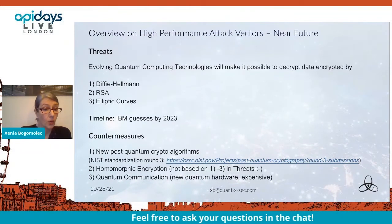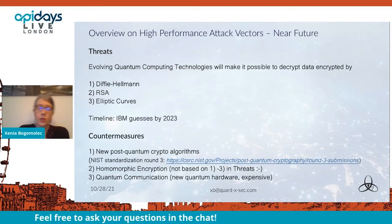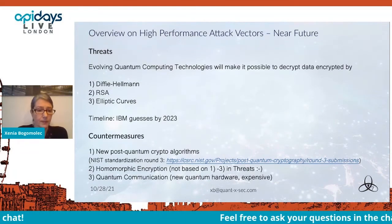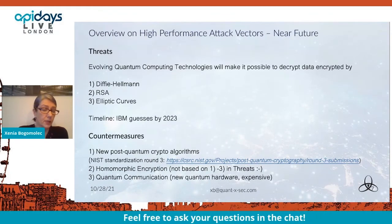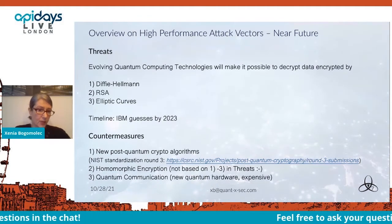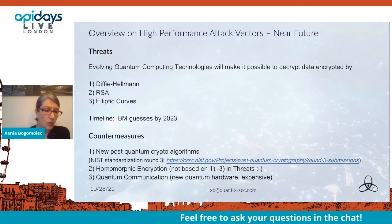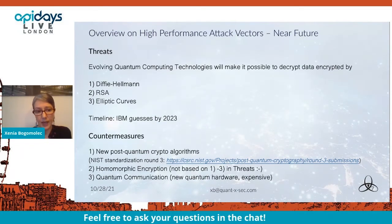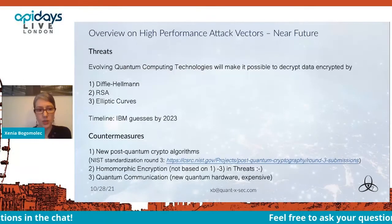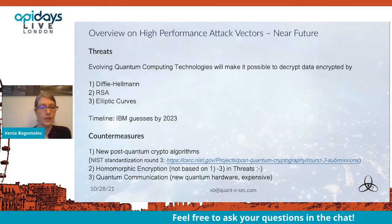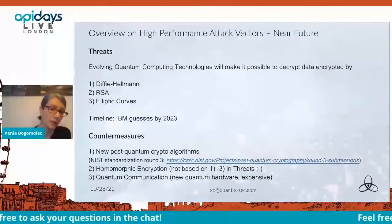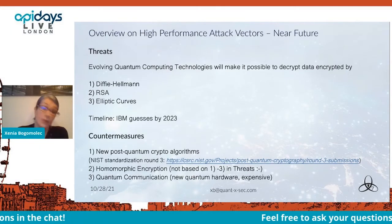We also have homomorphic encryption. I'm not sure yet how interesting this will be for APIs, but I wanted to mention it. Homomorphic encryption offers the possibility to edit encrypted data without decrypting it. The current state of these algorithms is that they are still very slow. But for certain processes which demand high privacy, this could be interesting — DARPA is working with it for some processes.